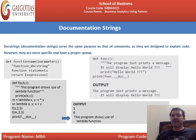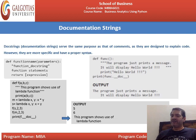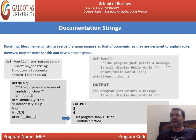Next is the documentation string, which is optional. A doc string or documentation string serves the same purpose as a comment — the interpreter never executes comments; they are designed to explain code but are more specific and have a proper syntax. The syntax is: def function_name(parameters): then the function doc string, function statements, and return expression.